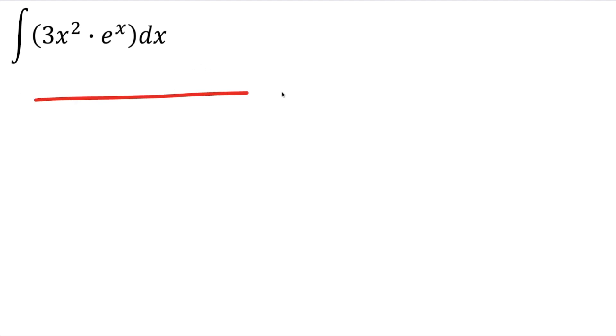So with the tabular method, we have to first make a little table. One side will do derivatives, the other will do integrals. And it's very easy to get the integral of e raised to x, so we'll put it here. And it's very easy to get the derivative of 3x squared, so we'll put it here.